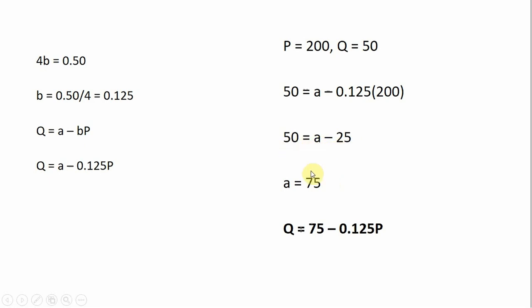So adding 25 to both sides, A equals 75. We can plug that back into our linear demand curve, and we have our estimated linear demand curve: Q equals 75 minus 0.125P.